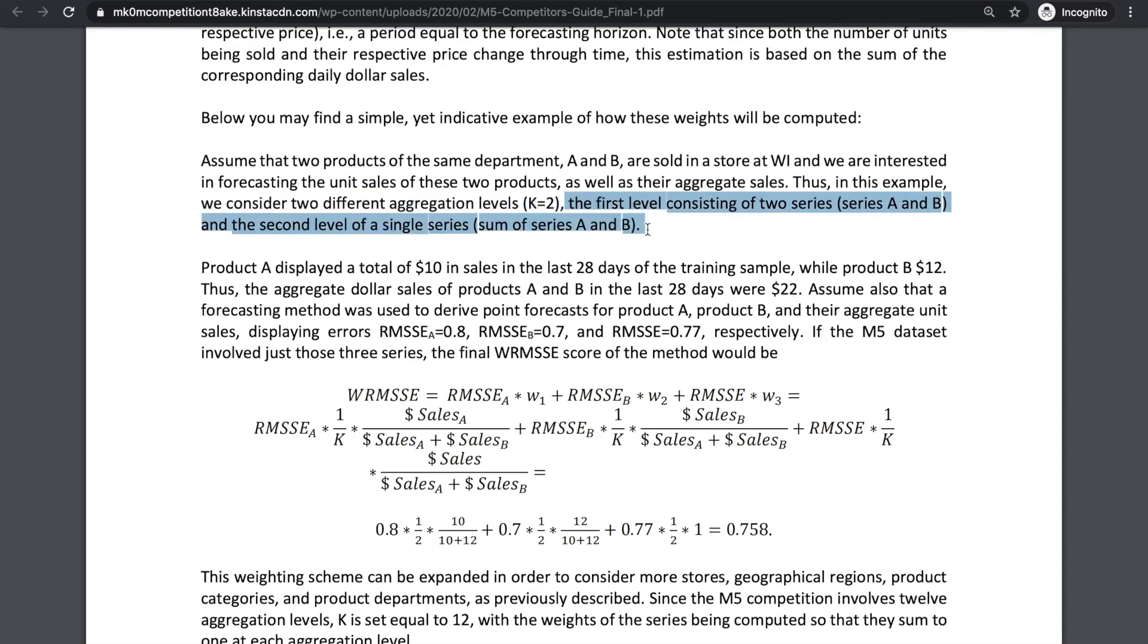And we assume there are only three series, two of them being units sold in one specific store in Wisconsin of product A and B respectively. Let's call this SA and SB. In the last series, they're aggregated sales. Let's call this SAB.